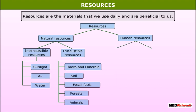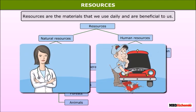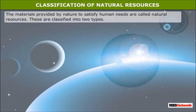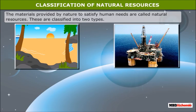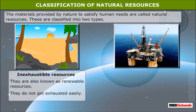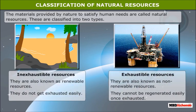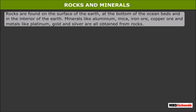Human resources can be skilled or unskilled. Skilled human resources are more useful as they are well trained in their work field. The materials provided by nature to satisfy human needs are called natural resources. These are classified into two types: inexhaustible and exhaustible. Inexhaustible resources are also known as renewable resources — they do not get exhausted easily. Exhaustible resources are also known as non-renewable resources; they cannot be regenerated easily once exhausted.